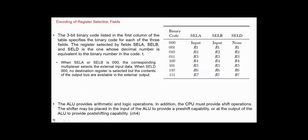Here we have the table for encoding of register selection fields. The three-bit binary code in the first column specifies the binary code for each of the three fields: Select A, Select B, and Select D fields. For example, the code for selecting register R2 is 0, 1, 0. Note that when Select A or Select B is 0, the corresponding multiplexer selects the external input data. And when Select D is 0, no destination register is selected, but the contents of the output bus are available on the external output.